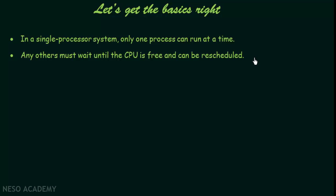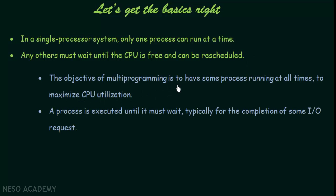We already saw that we have multiprocessor systems as well, which are much better because there are more processors and hence more processes can run simultaneously. The objective of multiprogramming is to have some process running at all times to maximize CPU utilization — we want some process to be running at all times so that the CPU is always being utilized.